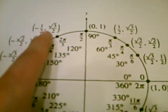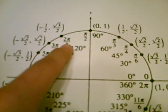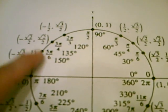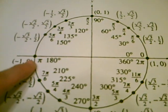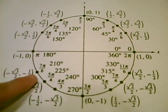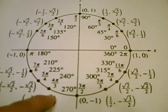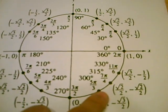And then 4 pi over 6, reduced to 2 pi over 3. 5 pi over 6 can't really reduce, so it's just 5 pi over 6. 6 pi over 6, reduced to pi. And so on, 7 pi over 6, and so on.